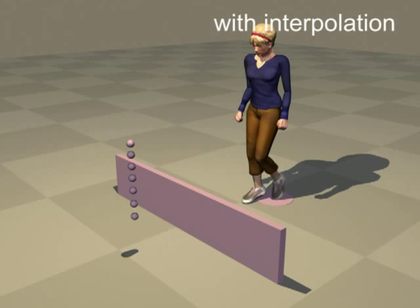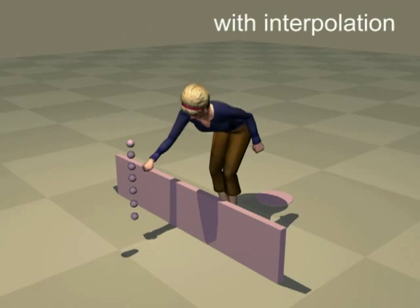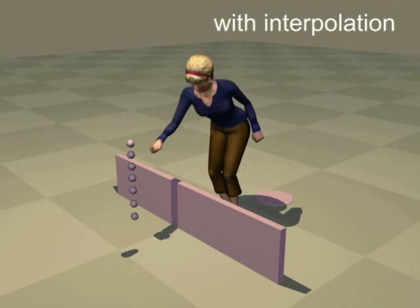An example of a more constrained problem, the character cannot get any closer to the object. Without interpolation, it is hard to satisfy all the constraints.